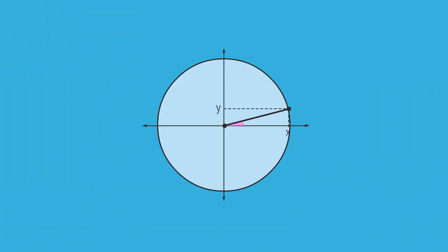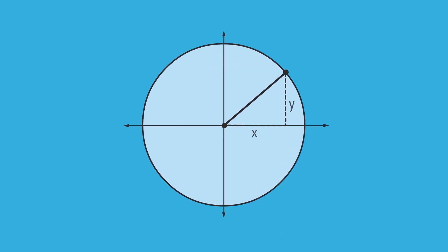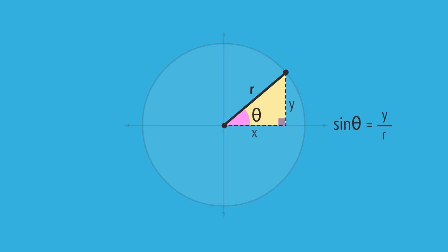Given any point on the circumference of a circle, we can relate its coordinates to the angle between the radius and the x-axis. Drawing a right-angled triangle, we can relate these values by writing trig ratios. For example, the sine of theta equals the opposite, the y-coordinate, divided by the hypotenuse, the radius r.